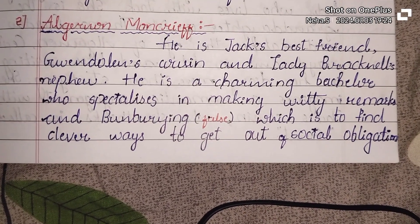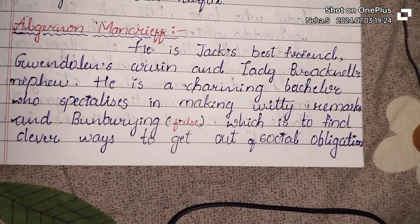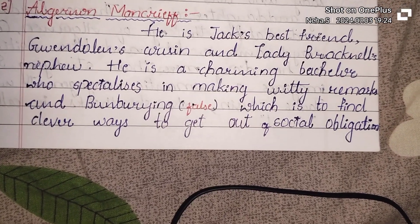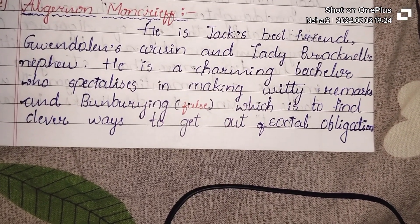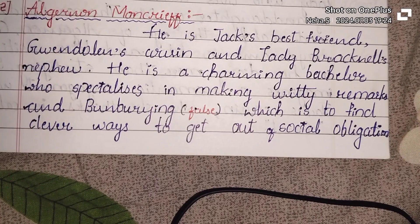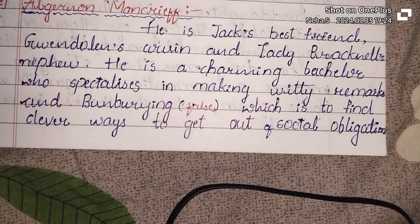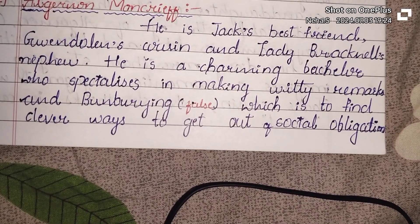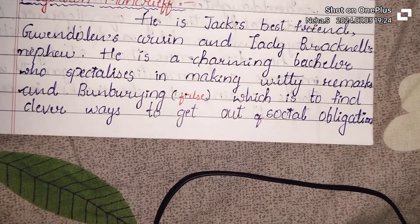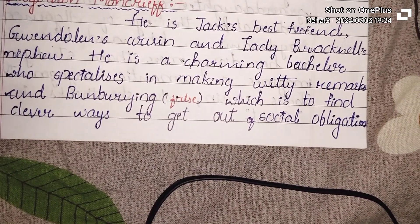The second character is Algernon Moncrief. He is Jack's best friend, Gwendolyn's cousin, and Lady Bracknell's nephew. He is a charming bachelor who specializes in making witty remarks and Bunburying — that is, using false or pseudo identities to find clever ways to get out of social obligations.